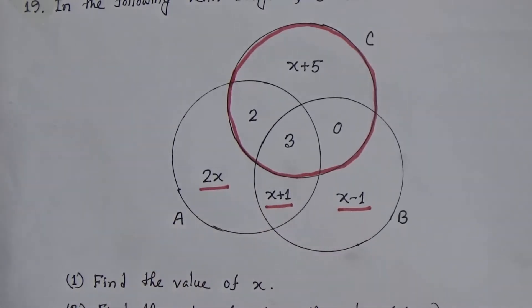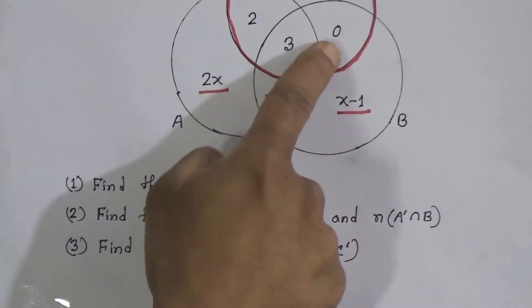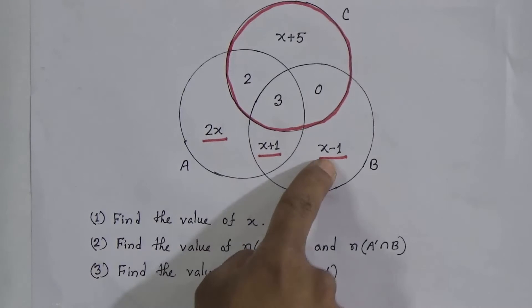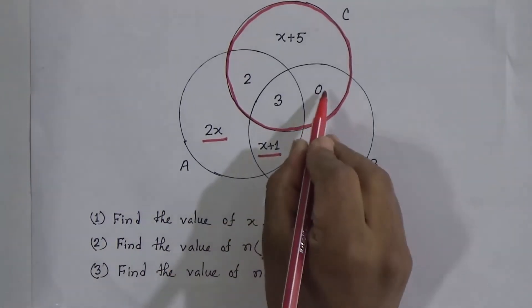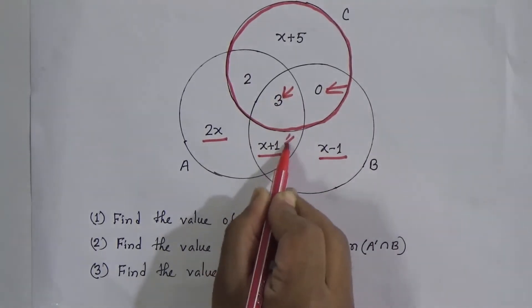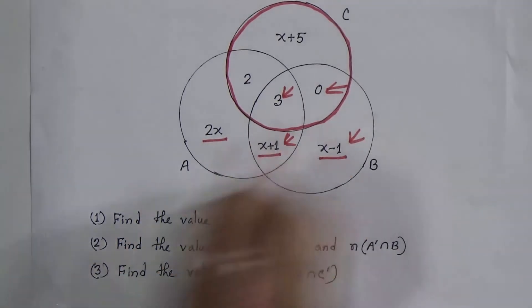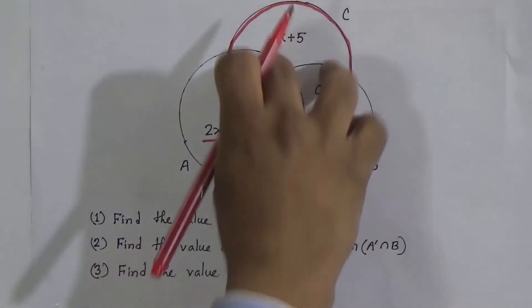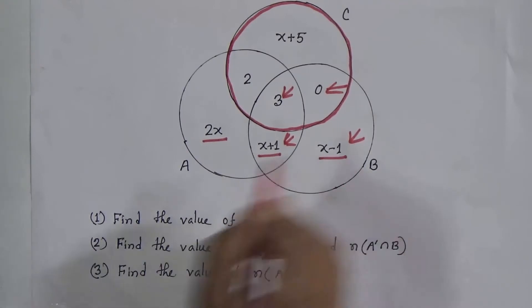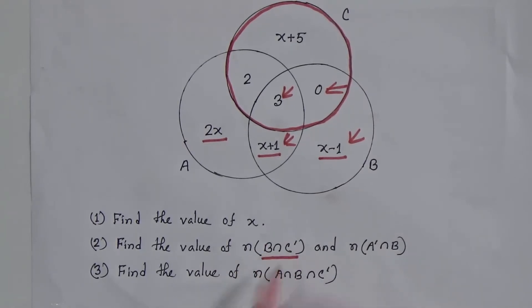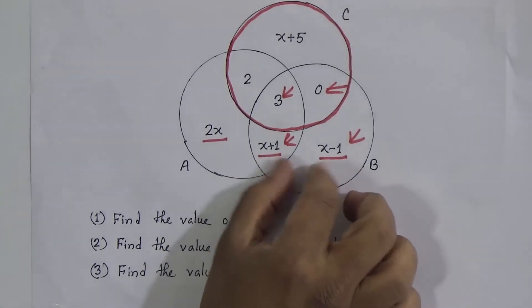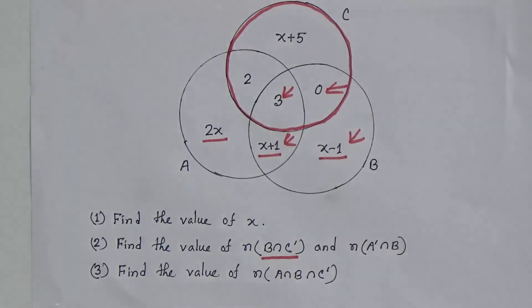We need to intersect C prime with set B. Set B contains four disjoint sets: 0, 3, (x+1), and (x−1). Intersection means the common elements. Between C prime — which contains 2x, (x+1), and (x−1) — and set B, the common elements are (x+1) and (x−1). So B∩C' contains (x+1) and (x−1).